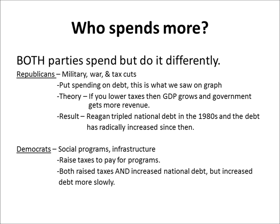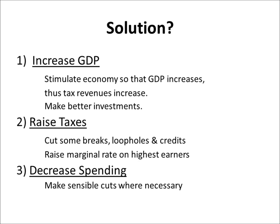Now let's talk about some possible solutions to get out of this spending problem. We stop having deficits which add to national debt, and we start having at least balanced budgets — hopefully surpluses where we can pay down the national debt. First of all, you want an increase in GDP. Obviously, the higher the GDP, the more revenue the government is going to collect via taxes, and we're going to be able to balance the budget more. To do this you have to stimulate the economy so that GDP increases.